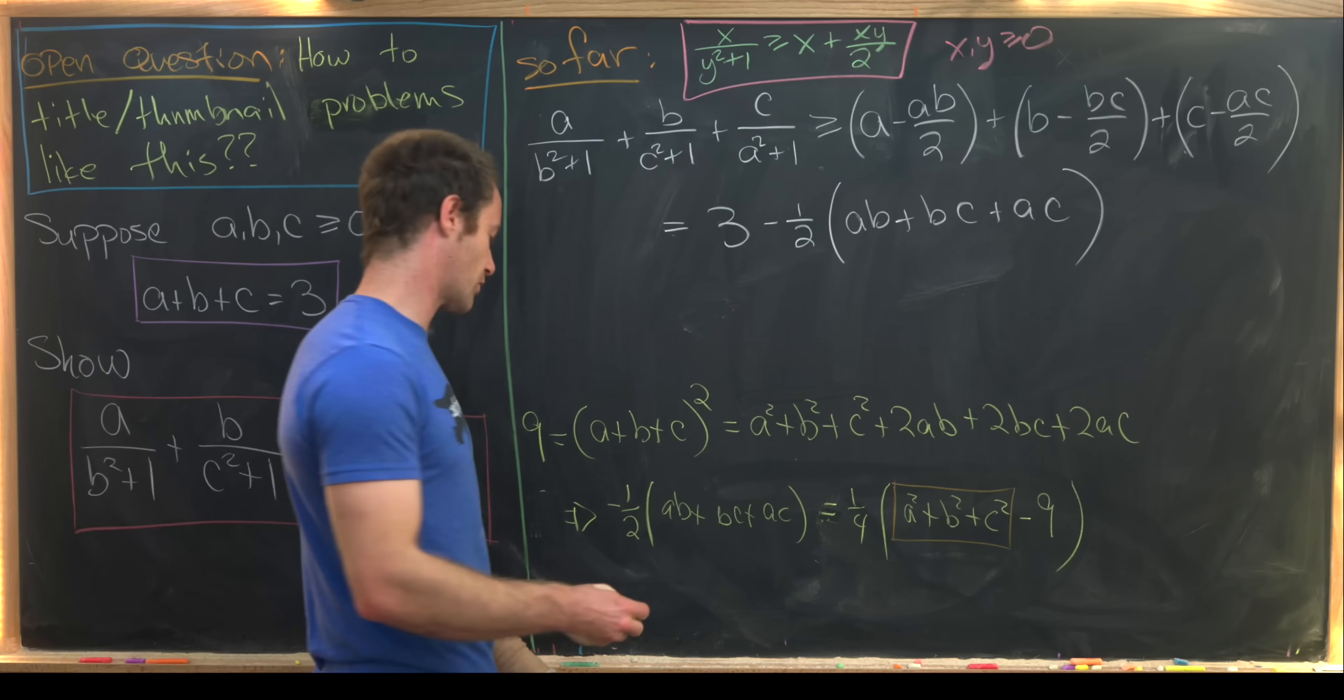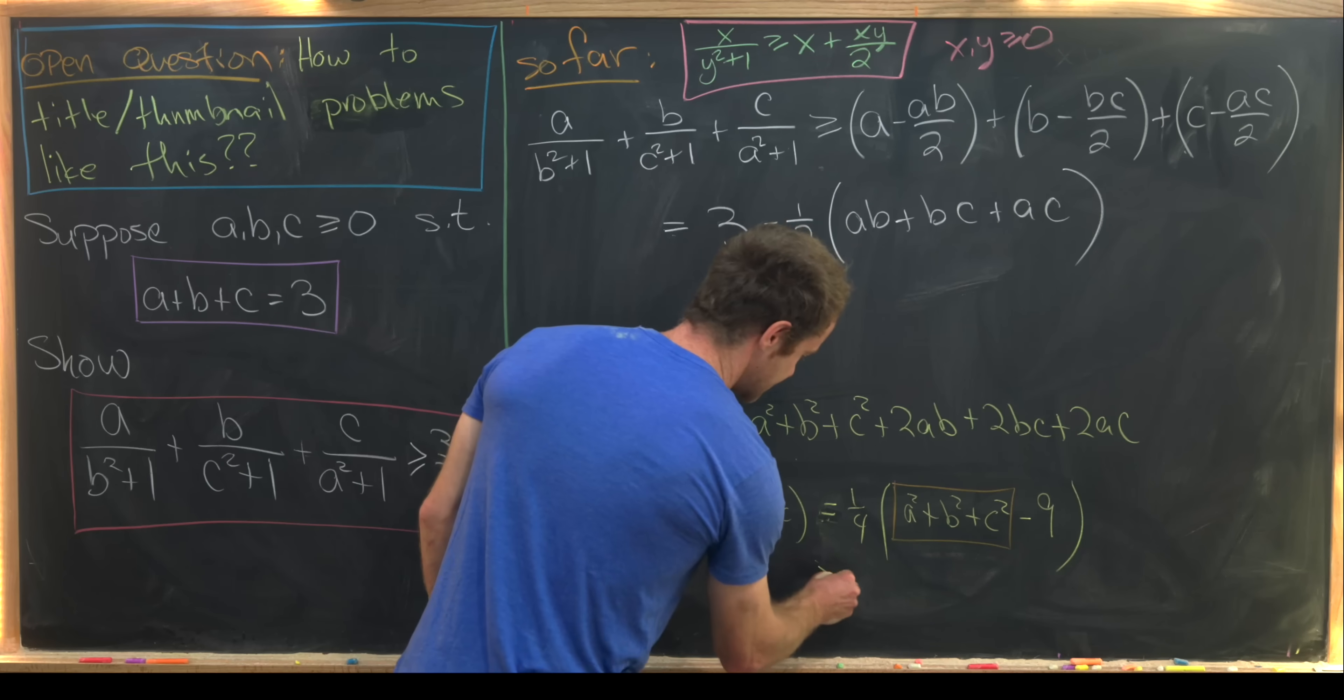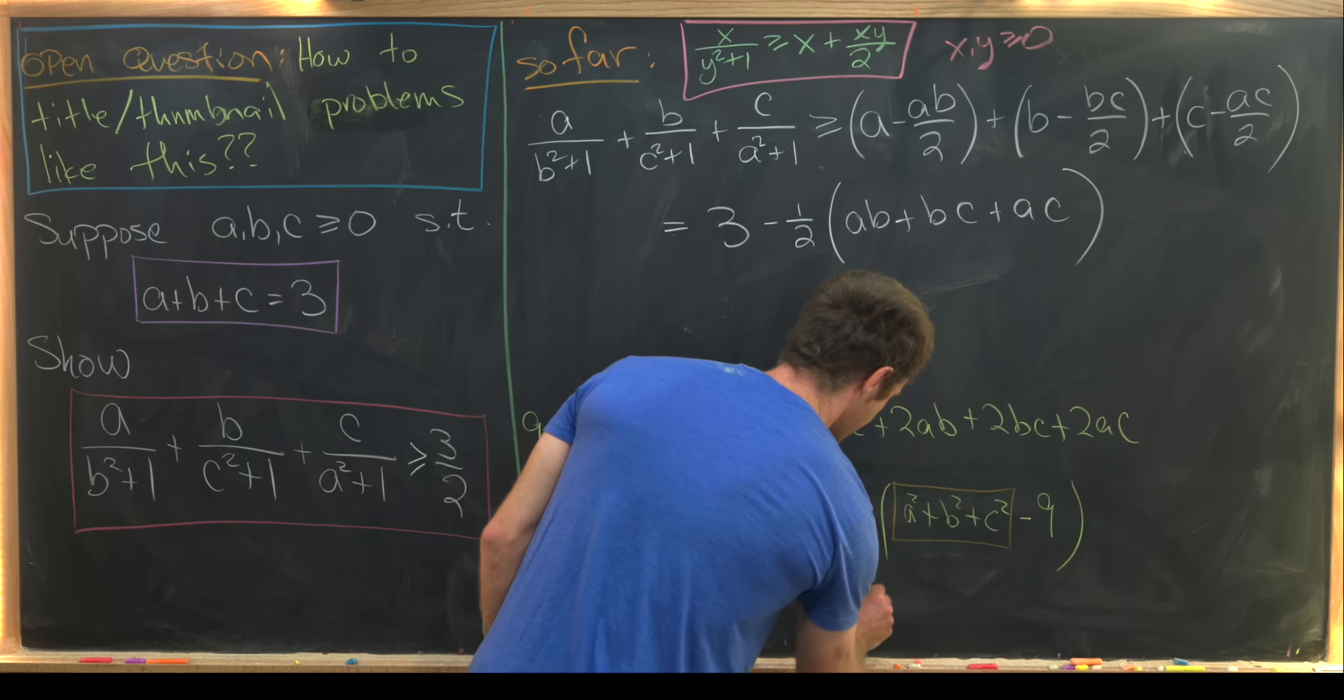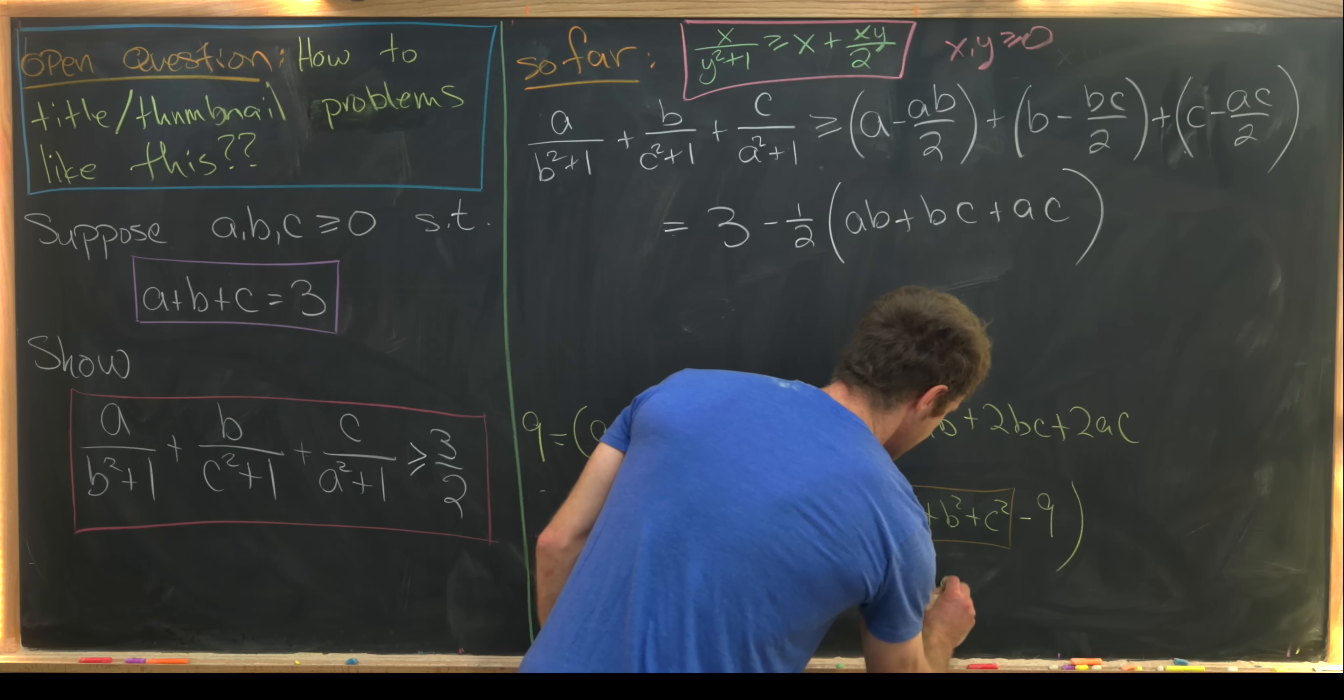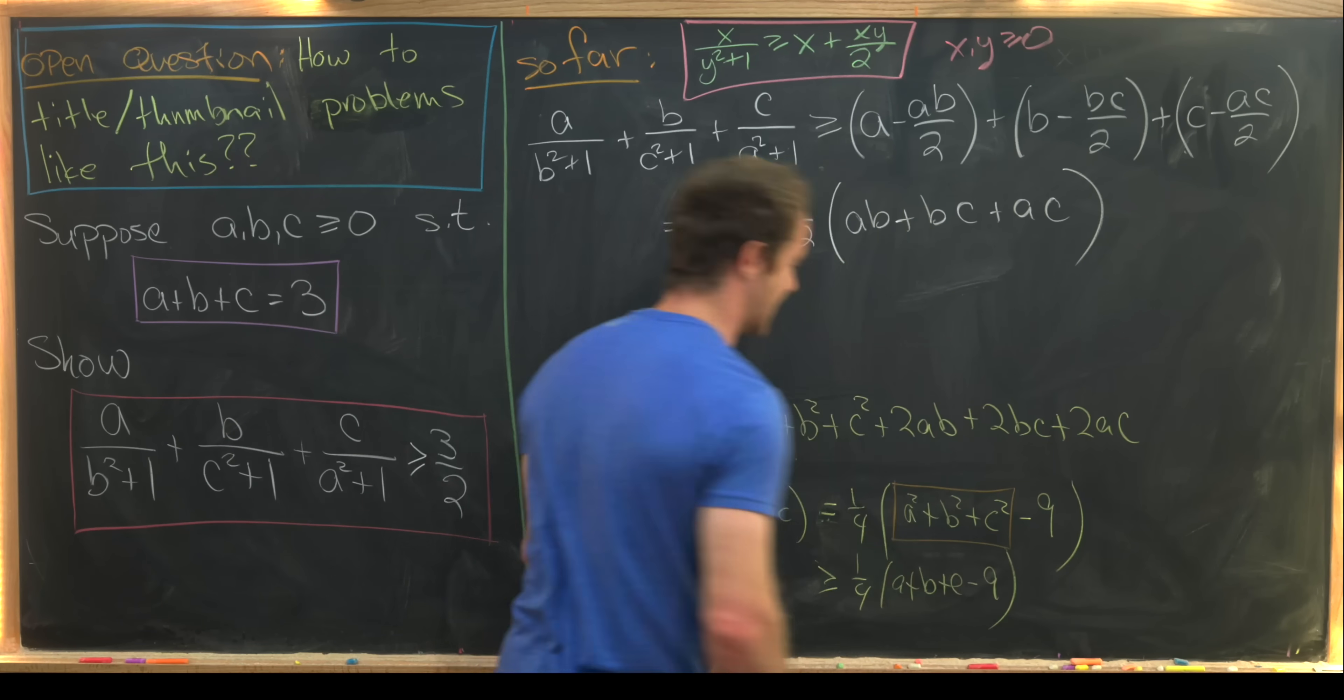Again, if we put the appropriate direction of inequality. So this is bigger than or equal to 1 quarter a plus b plus c minus 9.